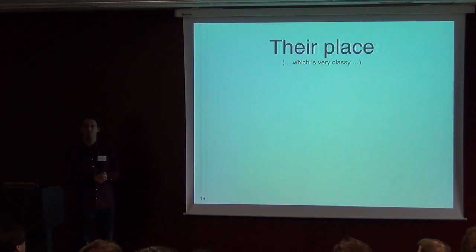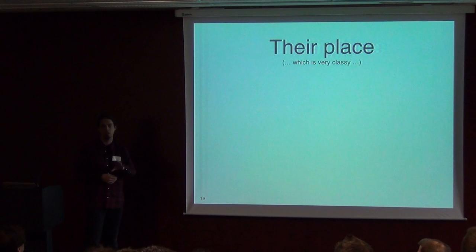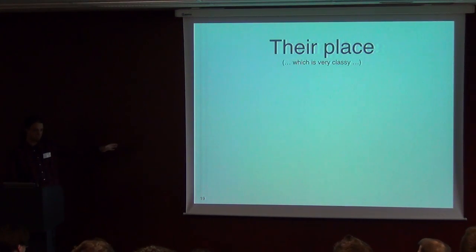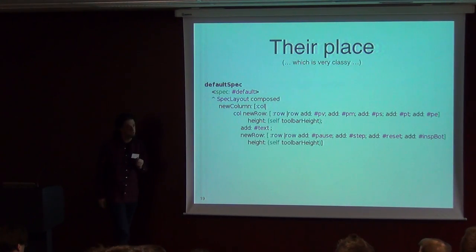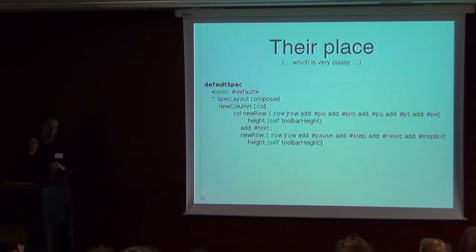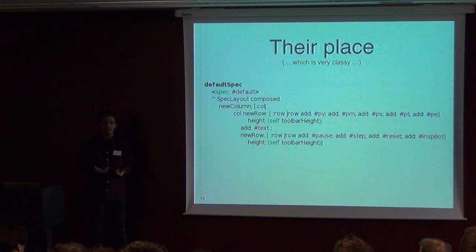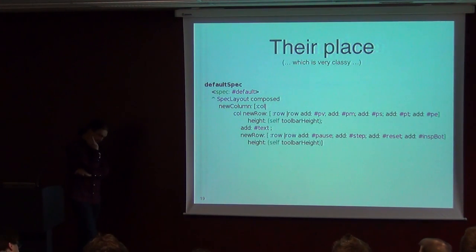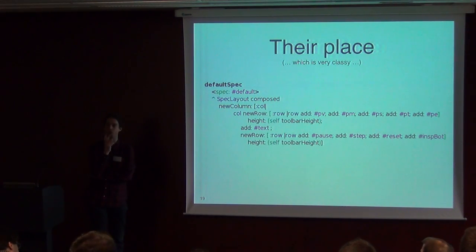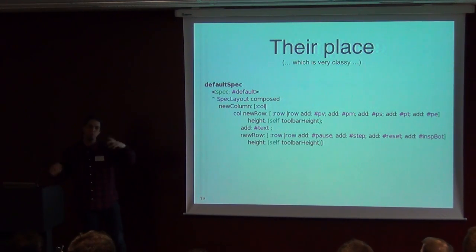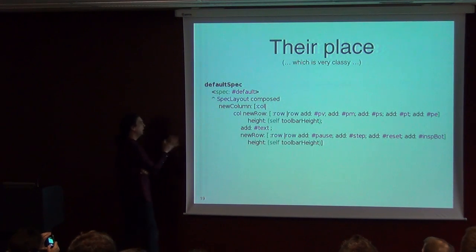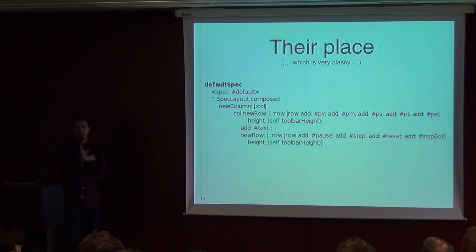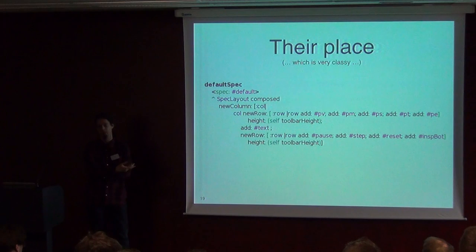Widgets know their place in widget society. It's very classy to know your place in society — this is why it's a class message. At class side you have a message, and what's important is that you put a pragma so the interpreter knows where to recreate this. In there you define your layout. Defining a layout is actually really complicated. There are so many different ways in which you want to put widgets — centering, left and top, right, proportional between an offset, etc. I'm not going to talk about everything because we don't have enough time.